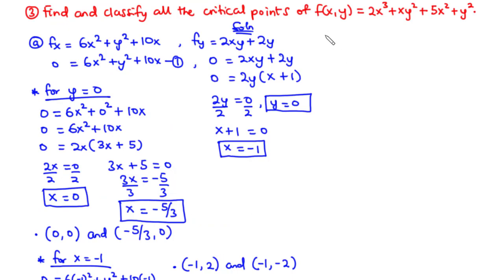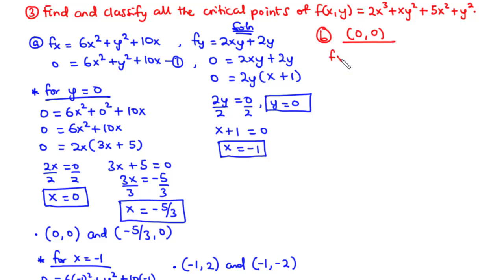Now let's start the classification process. Considering the point (0, 0), we need to find fxx, fyy, and fxy. We differentiate fx again with respect to x: we differentiate 6x squared to get 12x, y squared with respect to x goes to 0, and differentiating 10x gives 10. So fxx equals 12x plus 10.